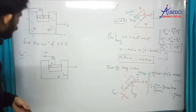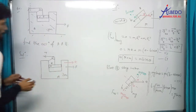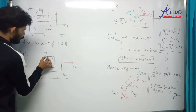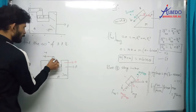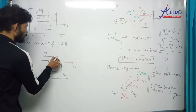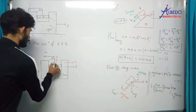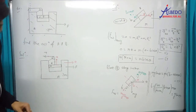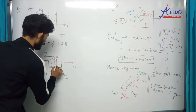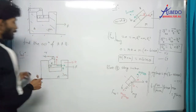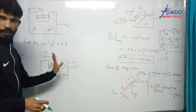अगर हम लोग लिखते हैं कि इसका acceleration A है, तो आप जानते हैं कि जितना बड़ा होगा उतना ही यह छोटा होगा. और इसका acceleration — string constant बताया हुआ है. दूसरा, यह इसके साथ फँसा हुआ है, attached है, तो इसका एक acceleration यह भी है. मतलब B का दोनों accelerations हैं.